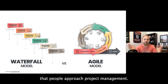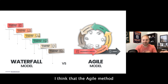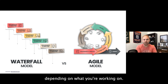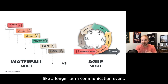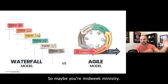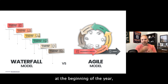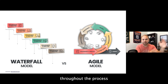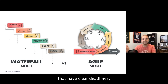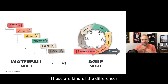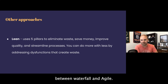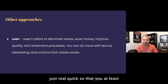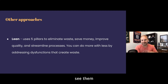Here's a visual comparison of waterfall versus agile. In the waterfall model, you look at requirements and analysis, then move to the next step — sequentially. In agile, you look at requirements and analysis, but then also design, implement, and test — then go back, evaluate, analyze, make changes, and eventually launch. The agile method has validity in church communications depending on what you're working on — for example, a midweek ministry you promote at the start of the year but adjust your promotion throughout the year. Other ministry events with clear deadlines are more like the waterfall approach.